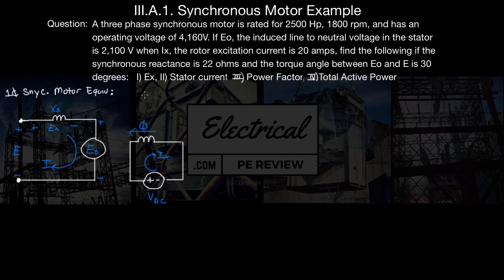First thing it asks is we want to find EX — our voltage across our synchronous reactance X of S. Let's fill in the known values on the diagram. From the problem, X of S, our synchronous reactance, is 22 ohms — and we know it's J because it's reactance, so J22 ohms.